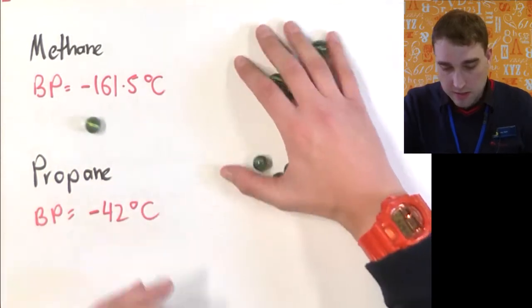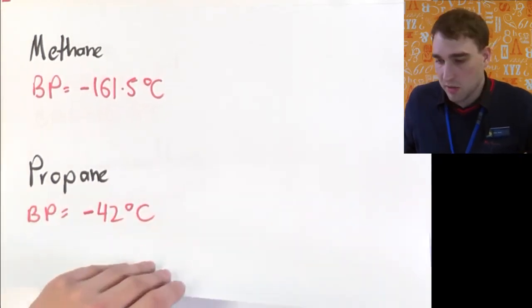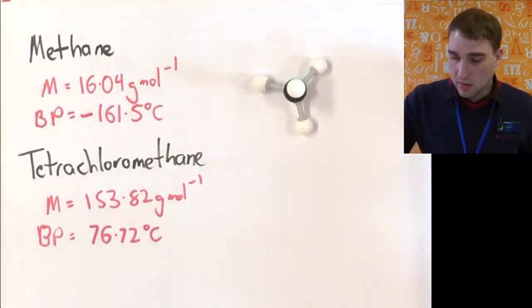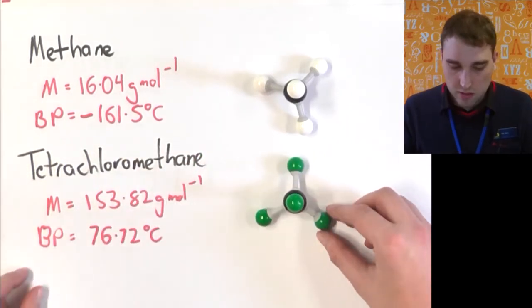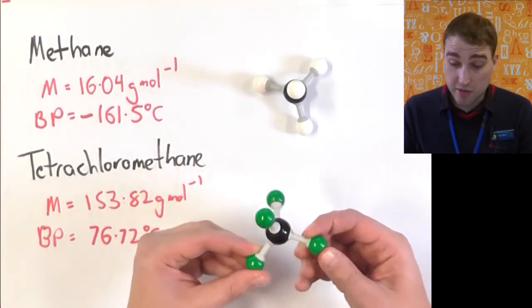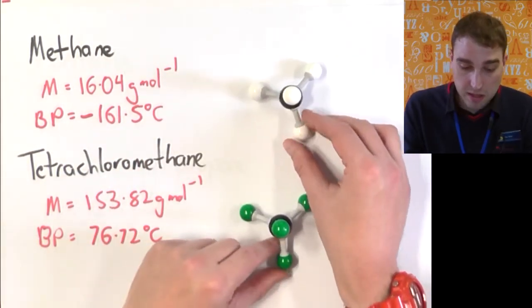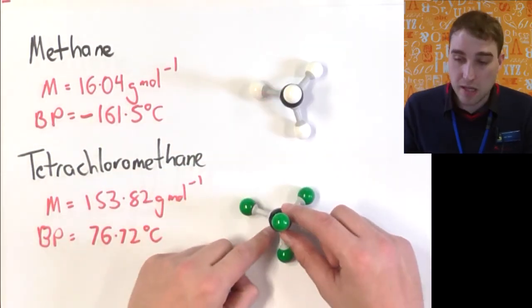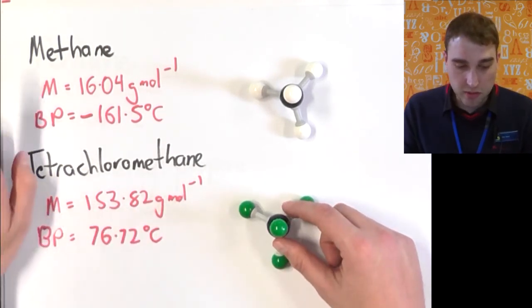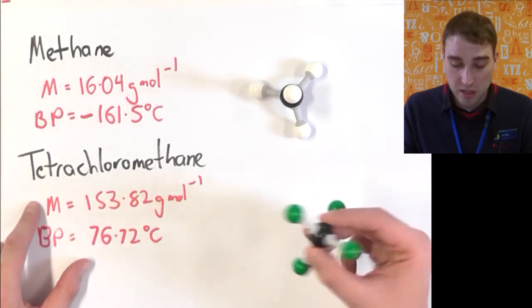Let's look at some specific examples of how the atoms that make up the molecules can determine the strength of the secondary forces and that effect on boiling point. Again we've got methane, and then I've got a close relative of methane: tetrachloromethane. Rather than having hydrogens at each corner of the tetrahedron, we've got four chlorine atoms. Chlorine is a lot heavier than hydrogen, so it has a higher molar mass. The molar mass of methane is 16.04 g/mol and tetrachloromethane is 153.82 g/mol.